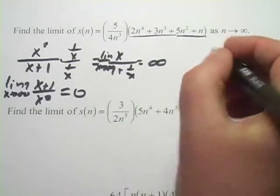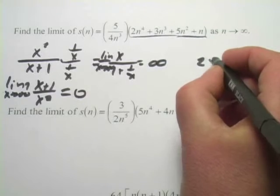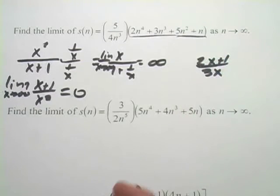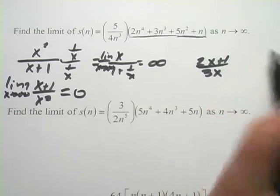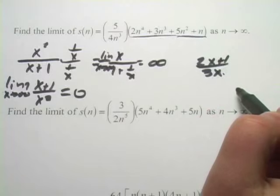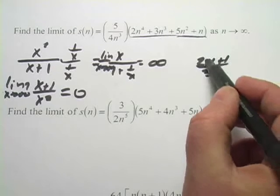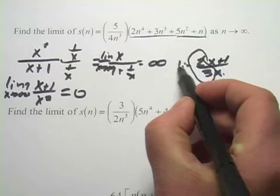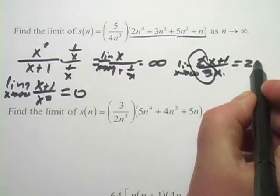Now, there's one other case. What if you had 2x plus 1 over 3x? Well, in that case, the 1 pales to insignificance. And the x's are both infinities, so it's almost as if they cancel. And so your limit is just going to be two-thirds. So the limit of this as x approaches infinity is two-thirds.